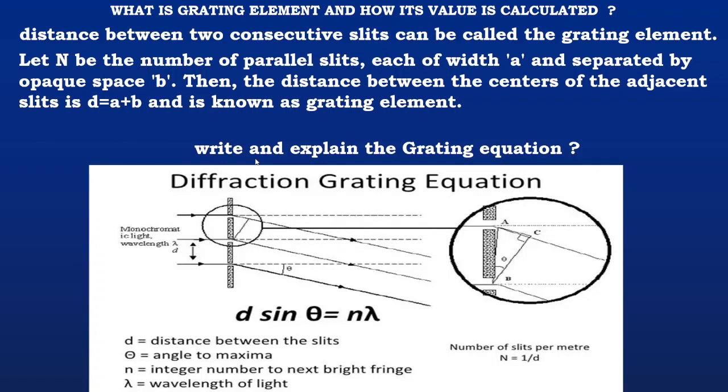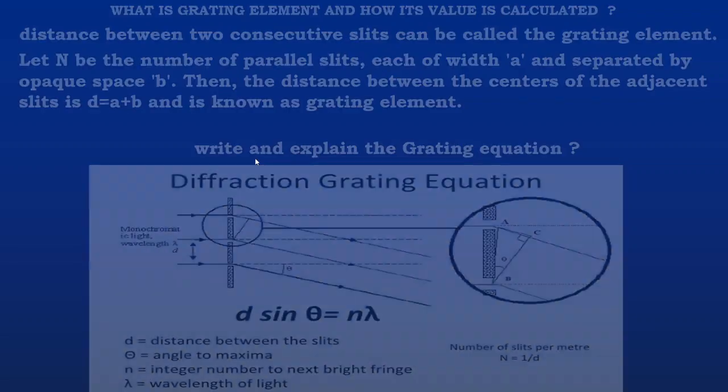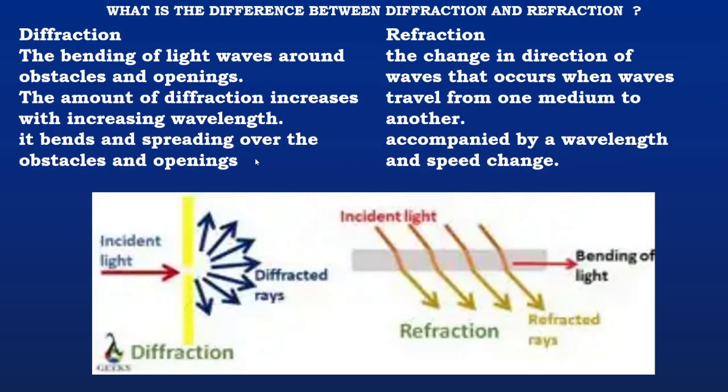Write and explain the grating equation. d sin θ equals n λ is the grating equation, whereas the terms d is distance between the slits, θ is the angle to maxima, n is the integer number to next bright fringes, and λ is the wavelength of light. The number of slits per meter is n equal to 1 by d.